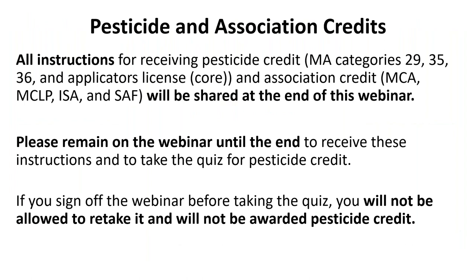A review for those who've been with us, and updates for those just joining today, about the pesticide and association credit process. All instructions for receiving pesticide credit — which includes today Massachusetts categories 29, 35, 36, and the applicator's or core license — as well as association credits, will be shared at the end of this webinar. Please remain on the webinar until the end to receive these instructions and to take the quiz for pesticide credit. If you sign off before taking the quiz, you will not be allowed to retake it and will not be awarded the pesticide credit.